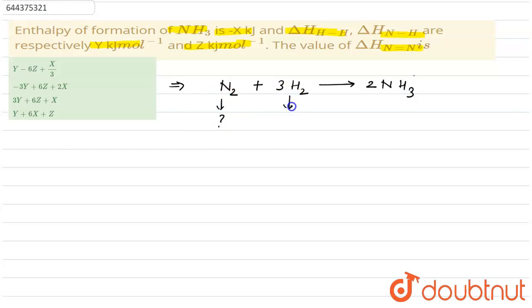Now for this N₂ we have to find out. For hydrogen it is given that y kilojoule per mole. For ammonia, for one NH bond it is given as z kilojoule.